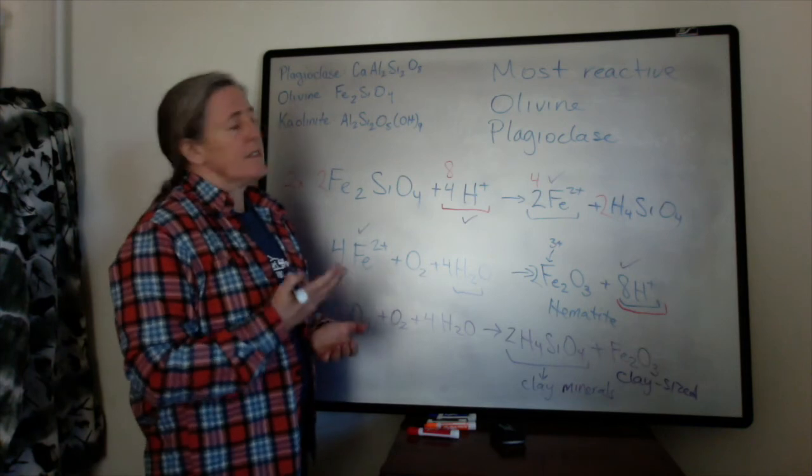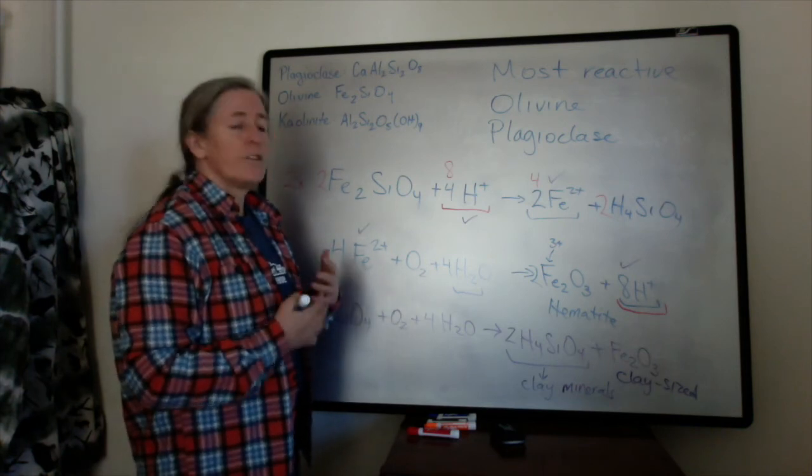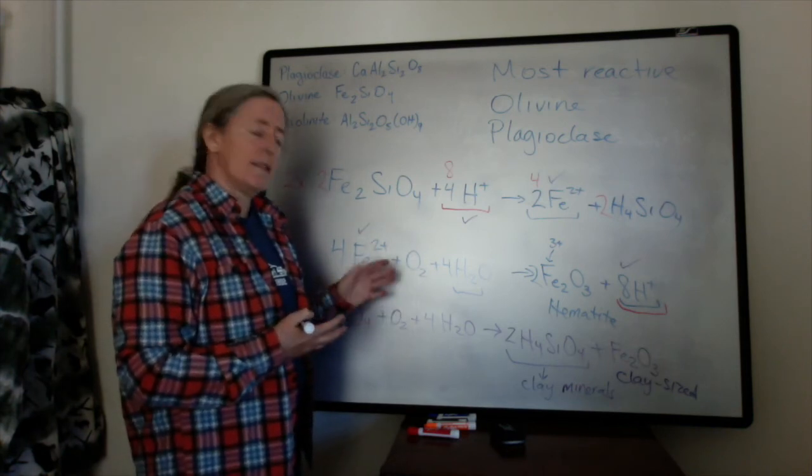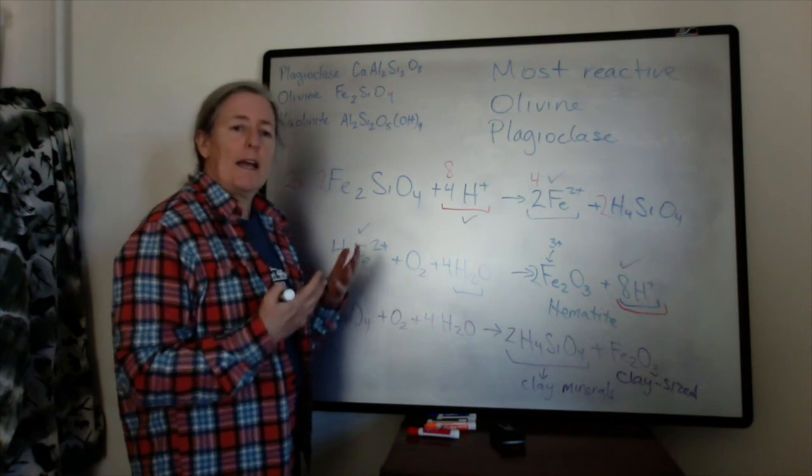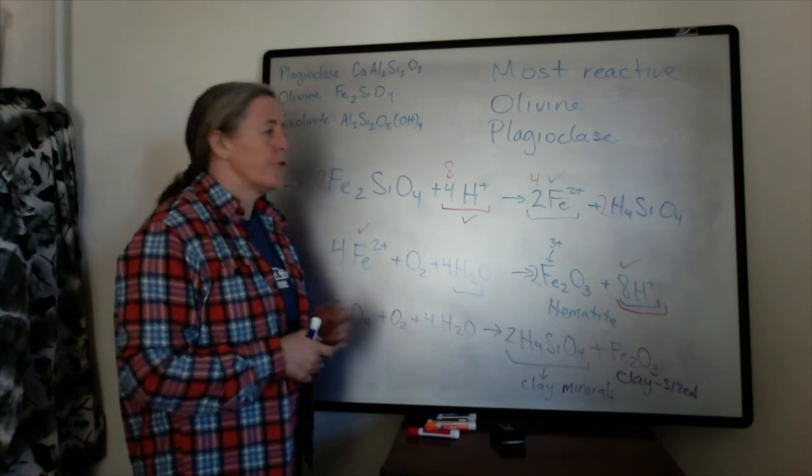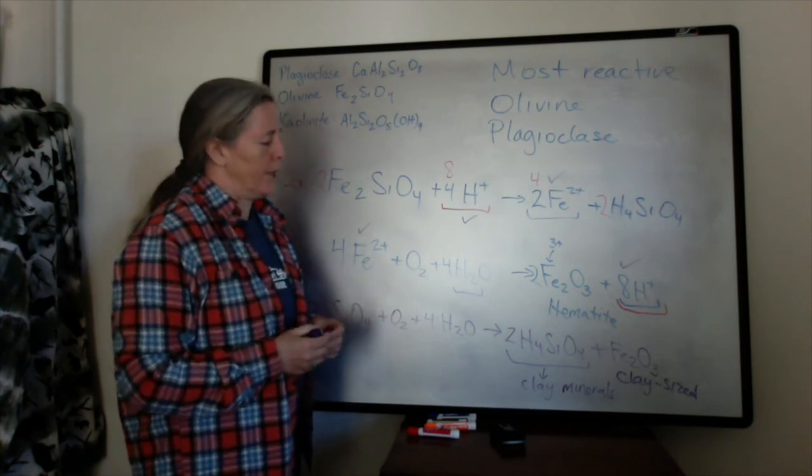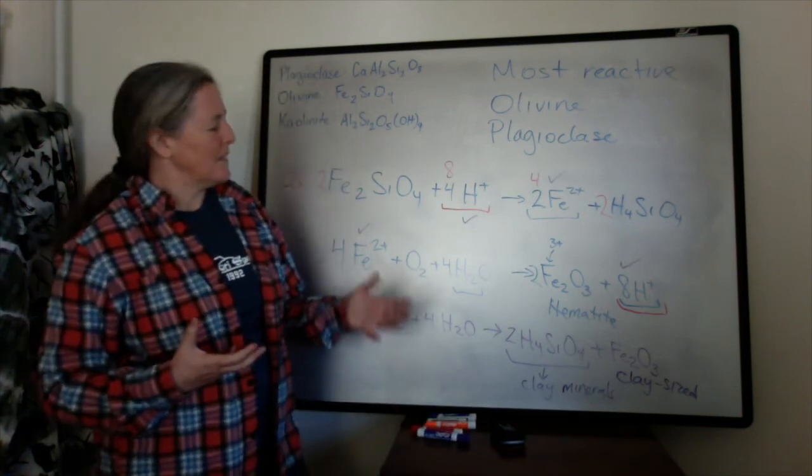So when you have pyroxenes and amphiboles, they also release oxides, if you have oxygen present, and silica and aluminum to form these alteration products.